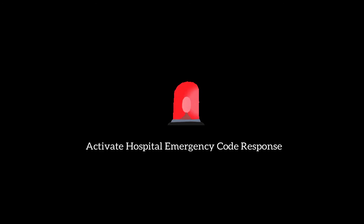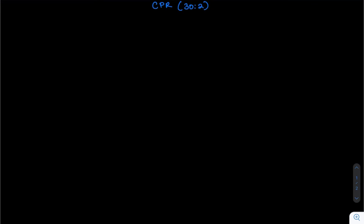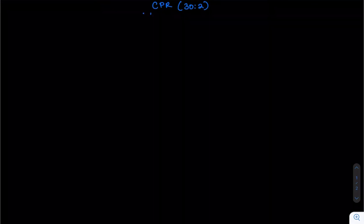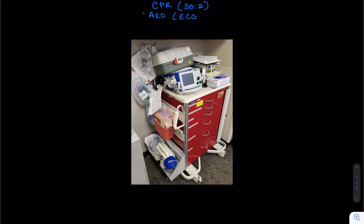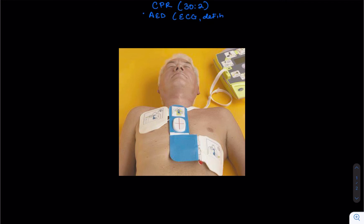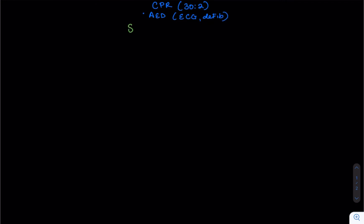Now that we got that down, so first thing you're going to do is immediately activate your hospital emergency code response, or in this case, a code blue. And then you're going to get down and dirty and begin CPR. You're going to be doing 30 compressions to two breaths at the rate of 100 to 120 per minute. At this point, a crash cart should be in the patient's room. AED is applied onto the patient. The AED will detect whether the rhythm is shockable or unshockable.